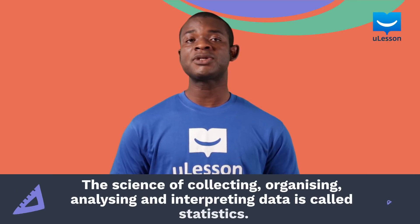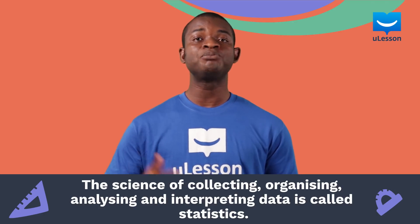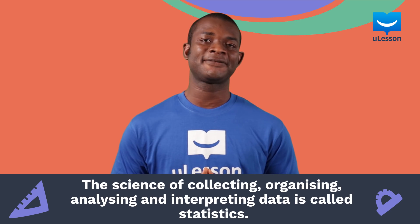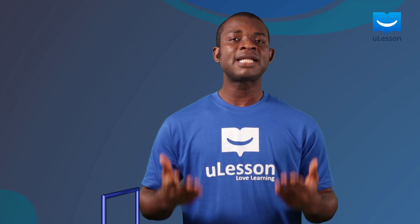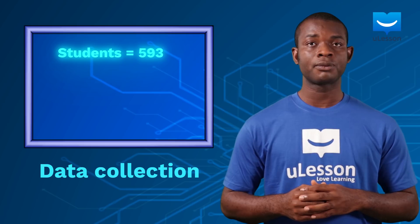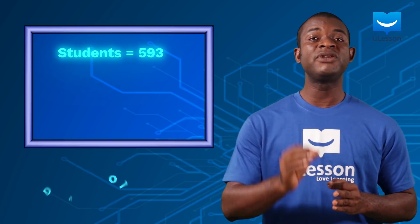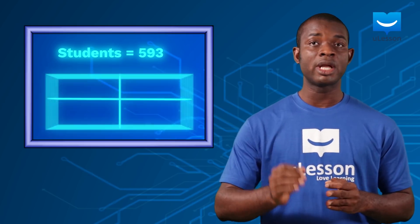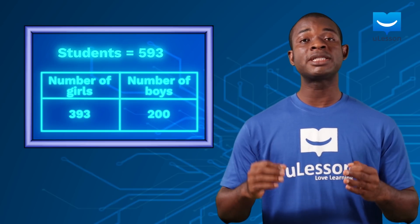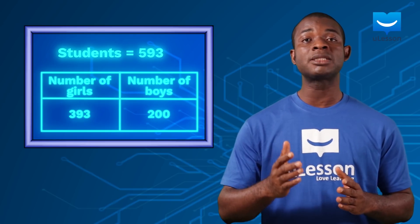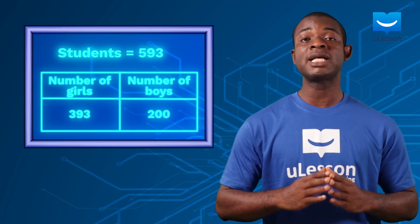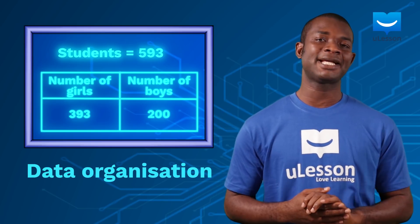The science of collecting, organizing, analyzing, and interpreting data is called statistics. In statistics, we collect data like the number of students in your school. We may need to group them — if it is a mixed school — as number of boys and number of girls. We may also decide to group them according to classes or according to tribe. This process is called organizing data.